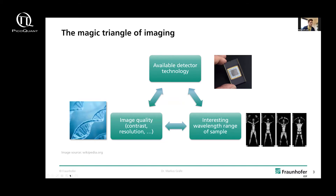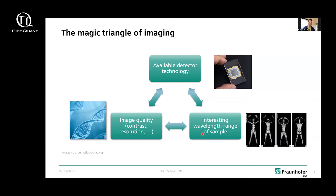Everyone has a given detector technology, a wavelength range of interest for the sample interaction, and some imaging quality requirements — contrast, resolution. It's not possible to enhance all of them at the same time. As an example, if you go for CMOS technology — cheap and good-performing CCD or CMOS chips — you cannot do imaging in the terahertz range. And if you would like to do imaging in the terahertz range, you cannot expect to have molecular resolution.